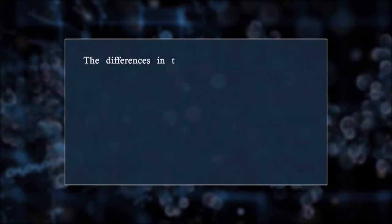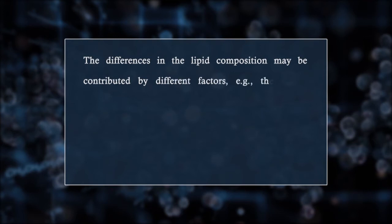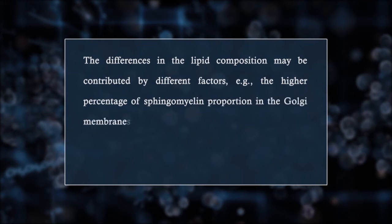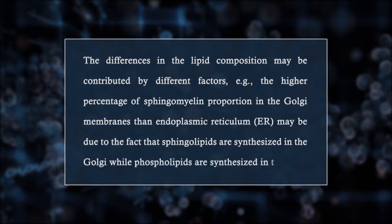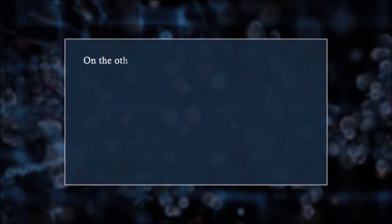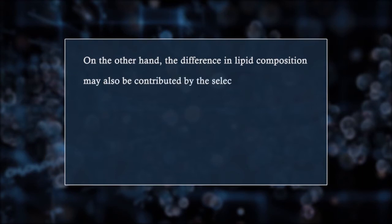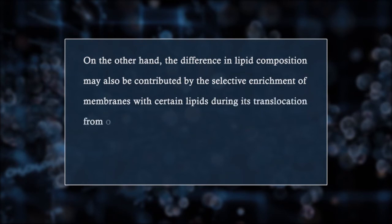The differences in lipid composition may be contributed by different factors. For example, the higher percentage of sphingomyelin in Golgi membranes than in the endoplasmic reticulum may be due to the fact that sphingolipids are synthesized in the Golgi while phospholipids are synthesized in the endoplasmic reticulum. On the other hand, the difference in lipid composition may also be contributed by selective enrichment of membranes with certain lipids during translocation from one cellular compartment to another.